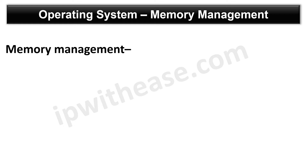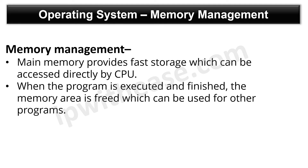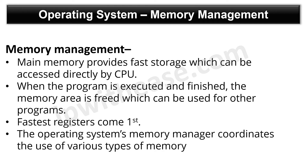The third type of task is called memory management, which refers to the management of primary or main memory. Main memory provides fast storage which can be accessed directly by the CPU. When a program is executed and finished, the memory area is freed, which can be used for other programs. Computer memory is arranged such that the fastest registers come first, followed by CPU cache, random access memory, and then disk storage. The operating system's memory manager coordinates the use of various memory types, which are to be allocated or de-allocated and how to move data between them.